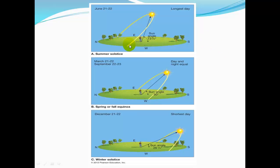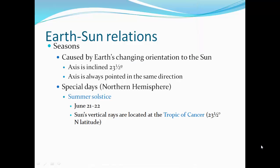In northern latitudes, the longest day has a sun angle of 73.5 degrees. At the spring or fall equinox, the sun is at about 50 degrees — between the highest and lowest angles of the year. At the winter solstice the sun angle is at its lowest, corresponding to cooler temperatures. Seasons are caused by Earth's changing orientation to the sun; the axis is inclined at 23.5 degrees and always points in the same direction as Earth revolves around the sun.